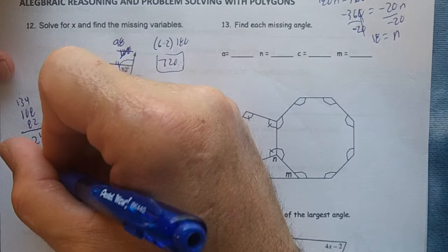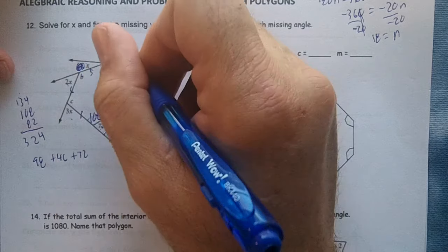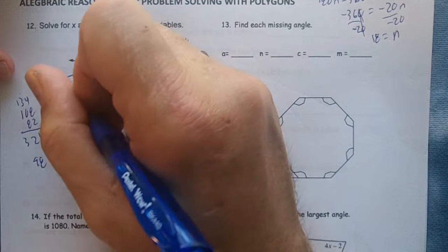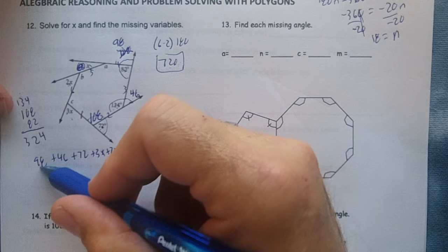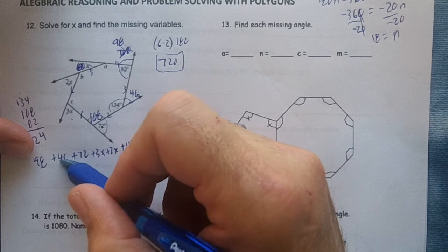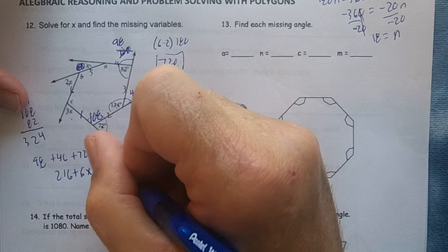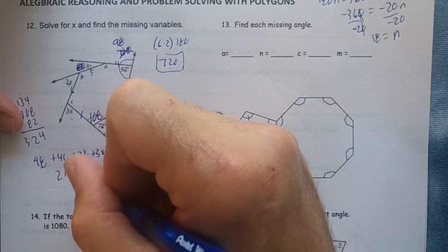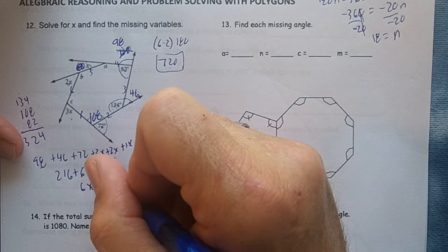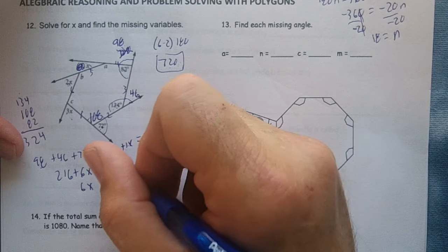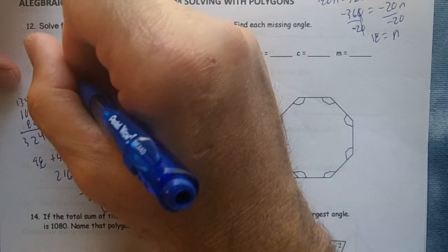So I'm going to add 98 plus 46 plus 72. Those are my outside angles, aren't they? Plus 3x plus 2x plus 1x, and that's where my 360 is going to come from. So 98 plus 72 is 170, plus 46 is 216. 3x plus 2x plus 1x is 6x equals 360. So I'm going to subtract the 216. I get 144. So if I add 144 and 216, I get the 360, divide by 6, and I'm going to get x equals 24. This is a lot of work right here.